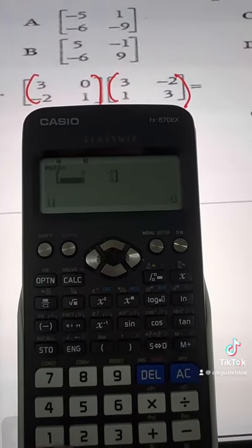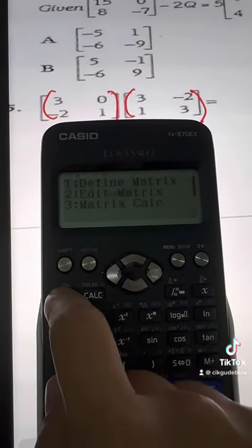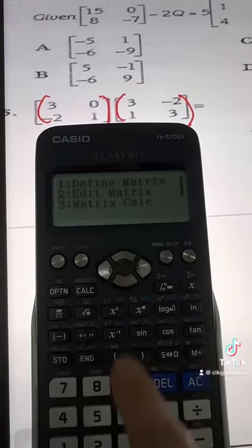All the information we inserted is now in the calculator. Now select OPTN again for the option of matrix calculation. Select 3.